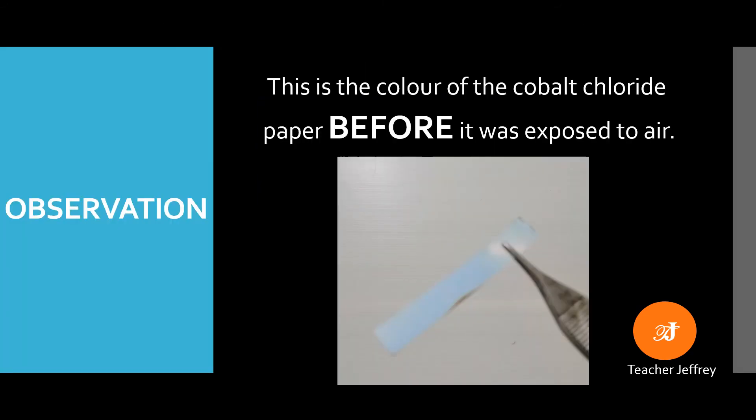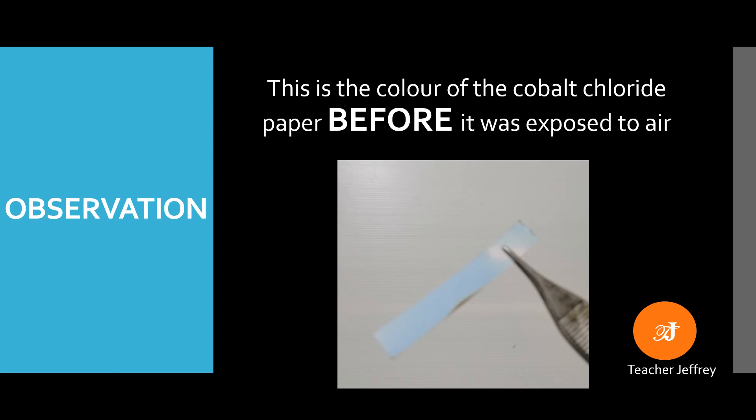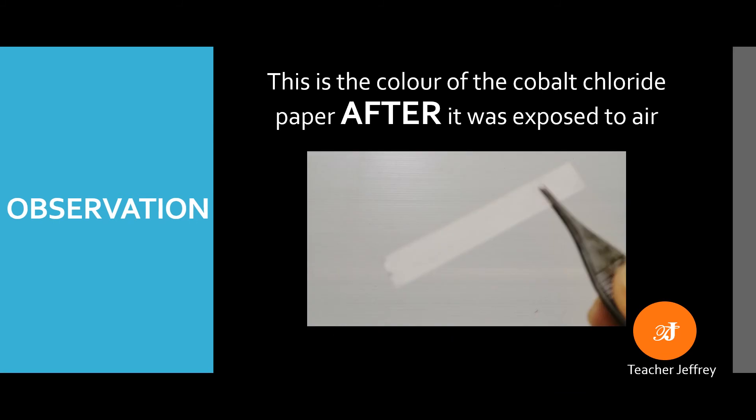For our observation, this is the color of the cobalt chloride paper before it was exposed to air. What is the color of the cobalt chloride paper? The color of the cobalt chloride paper is blue. This is the color of the cobalt chloride paper after it was exposed to air by waving or by blowing into it.